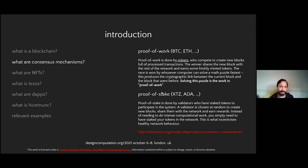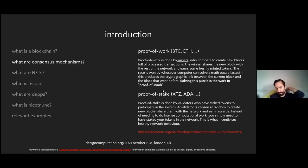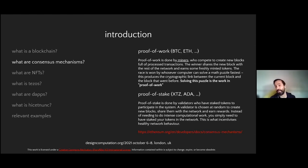There are other consensus mechanisms, like proof of space-time used by Filecoin and others, but proof of work and proof of stake are the ones that usually get discussed. Whereas blockchain might get some bad press, it's usually because of the proof of work consensus mechanism.